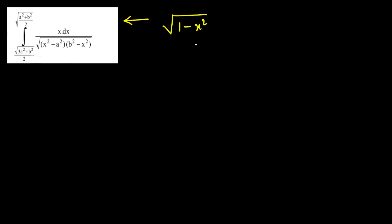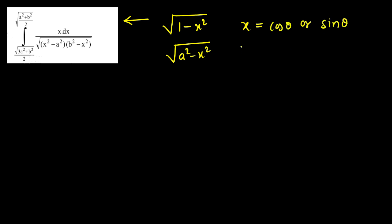Let me give you some simpler examples. Consider integrals with root over (1 − x²) or (a² − x²) — you're comfortable with those. In the first case, we substitute x = cosθ or x = sinθ. In the second case, we substitute x = a cosθ or x = a sinθ.